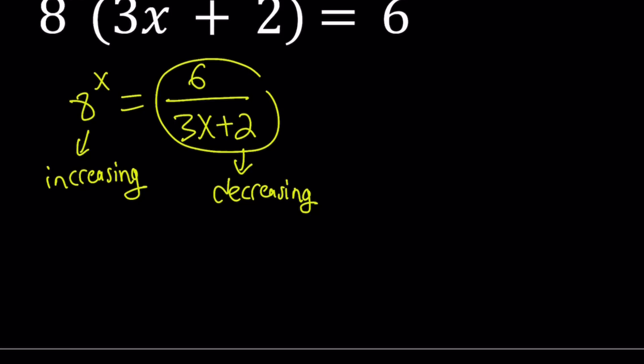So here's one thing to keep in mind. 8 to the power of x is always greater than 0. But 6 over 3x plus 2 can be negative. How? If the denominator is negative, then that's going to be the case. But let's go ahead and take a look at the limit.